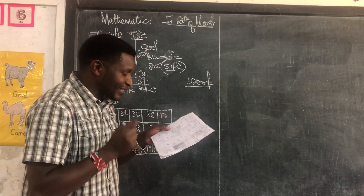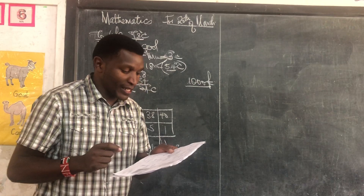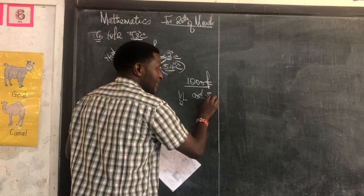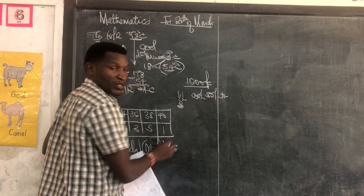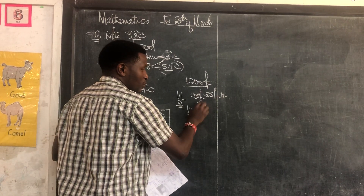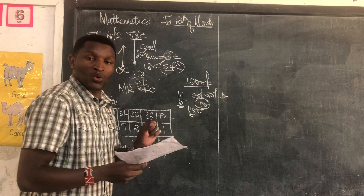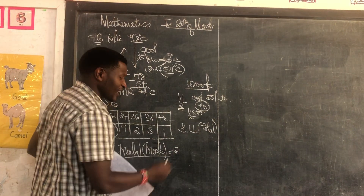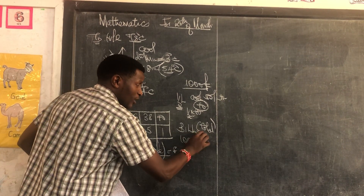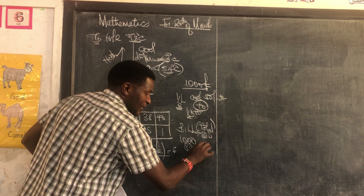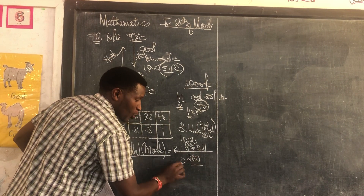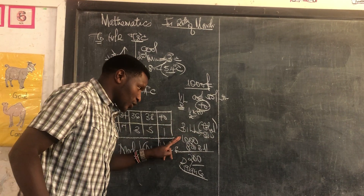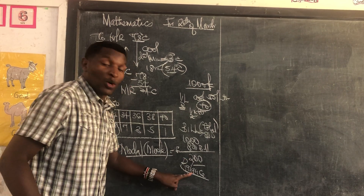He bought half a litre packet of milk at 80 shillings per litre. This person bought half a litre, but the cost given is 80 shillings — the cost of one litre. This person bought only a half, so we are going to take a half of 80, which is 40. Then we want to know the balance. There is a very big difference: the bill is the total amount of money you are required to pay. You pay using a 1,000 shillings note. If your bill was 800 shillings, then what you get is 200 — we call it the balance, not change.